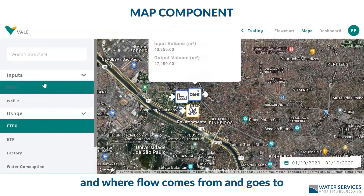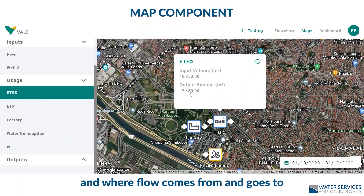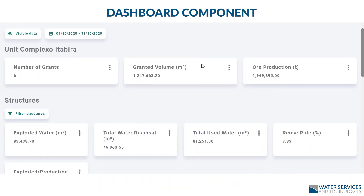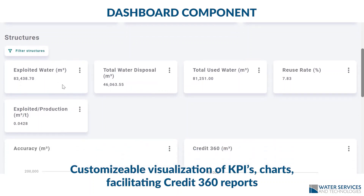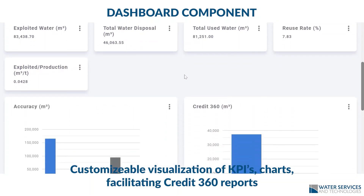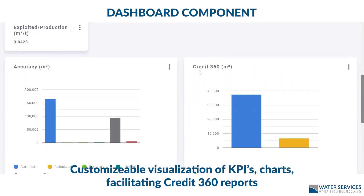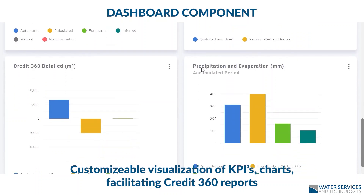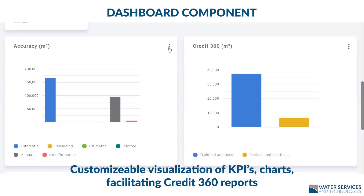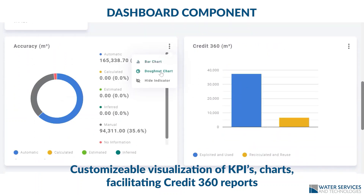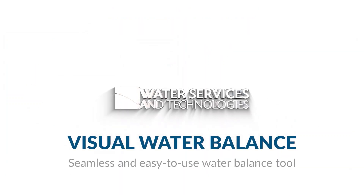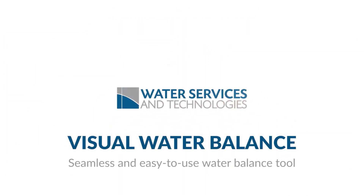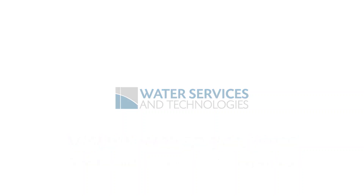The last module is the dashboard component. Here you can customize to view all your KPIs and other information of your choice, either numerically or in a number of customizable graphs. Generate all the information you need to report at Credit 360 in one click — do in minutes what would take days. Visual Water Balance: an easy to use, reliable, and flexible tool.